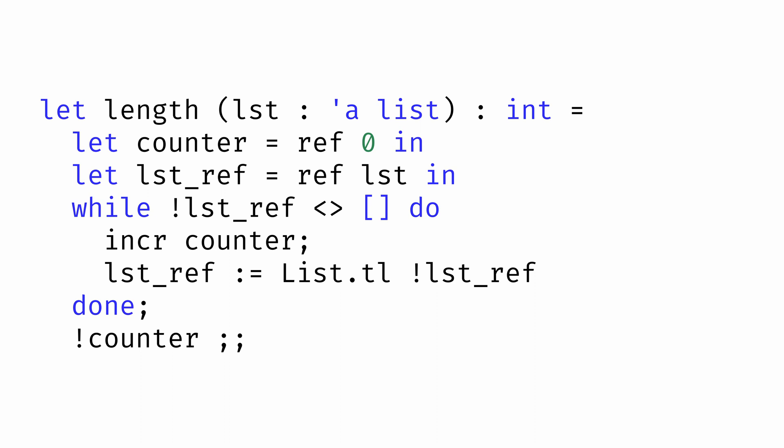Inside of the loop, we'll first increment the counter, and then update list ref to be the tail of whatever list ref currently refers to. So each time this loop repeats, we increase the counter, and update the list to be the tail of the list.